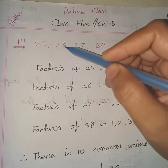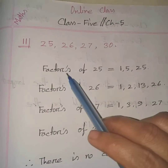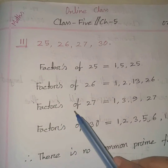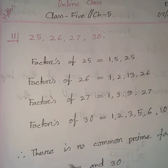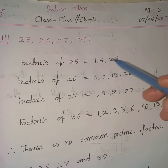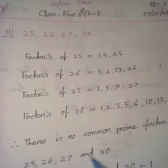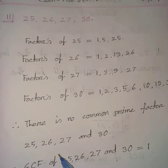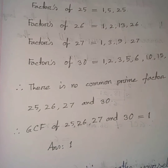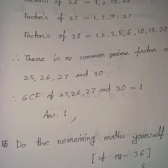Problem 11: find the GCF of 25, 26, 27, and 30. Factors of 25: 1, 5, 25. Factors of 26: 1, 2, 13, 26. Factors of 27: 1, 3, 9, 27. Factors of 30: 1, 2, 3, 5, 6, 10, 15, 30. There is no single common prime factor to all numbers. Therefore GCF of 25, 26, 27, and 30 is 1.